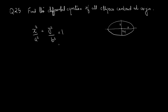This is the given equation — let this be equation 1. Now, we have two arbitrary constants, A and B. We need to eliminate those two. The differential equation will be of second order, since we have two arbitrary constants.